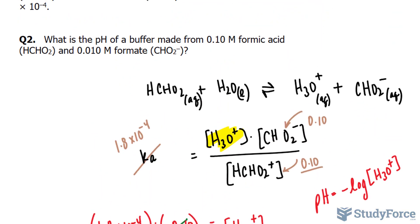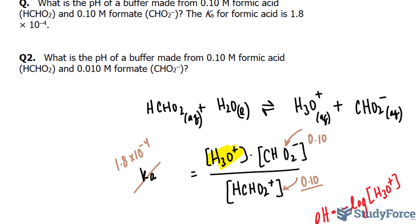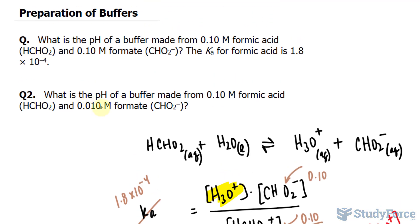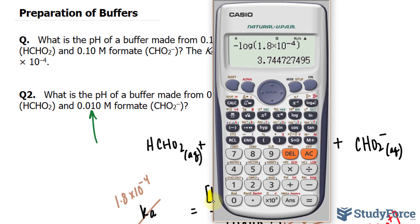Now in question number two, they say, what is the pH of a buffer made from 0.10 molar? If you recognize, that's the same as in question one. But this time, the concentration of this has decreased by a factor of 10. So think about it. We start off with 0.10, and if we divide that by 10, you get this number.